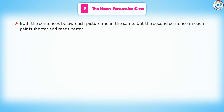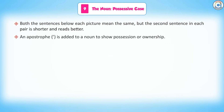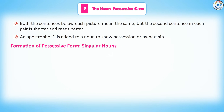Both the sentences below each picture mean the same, but the second sentence in each pair is shorter and reads better. An apostrophe is added to a noun to show possession or ownership. Formation of Possessive Form — Singular Nouns. Read the following sentences.